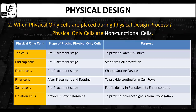When are the physical only cells placed during the physical design process? The physical only cells are the non-functional cells that are placed at specific stages during the physical design process.